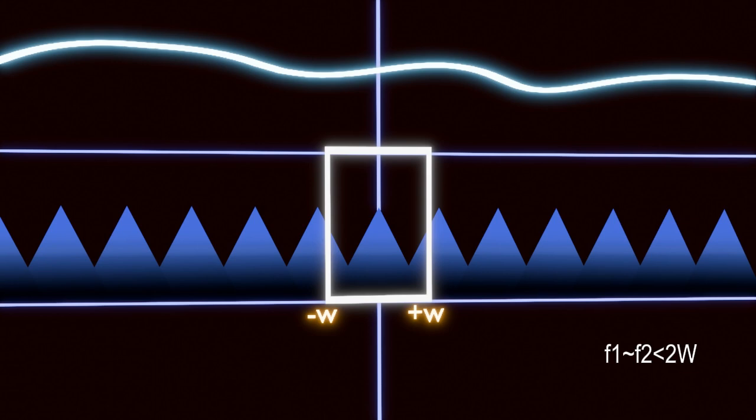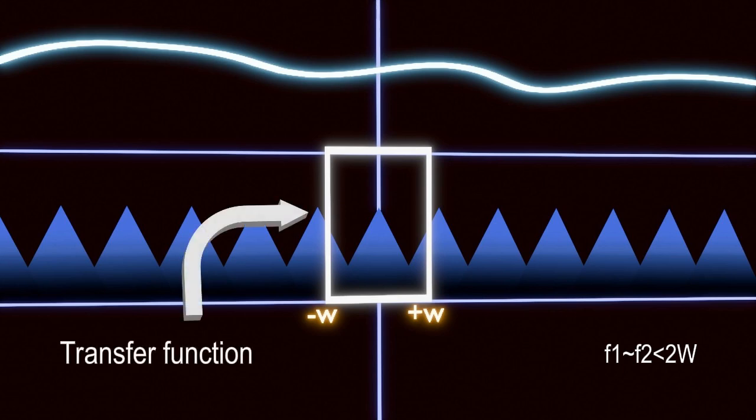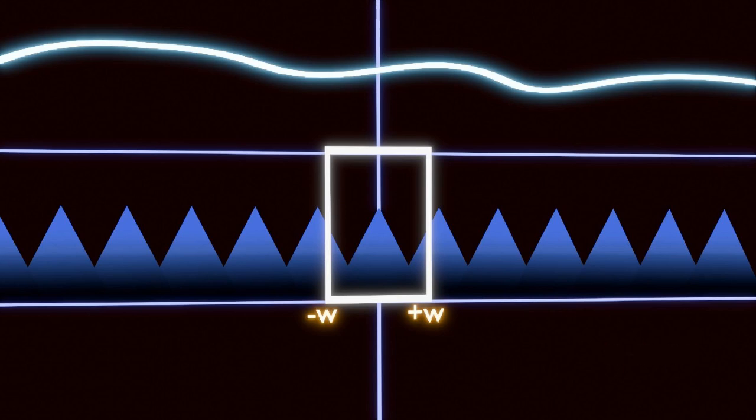To extract the transmitted message at the receiver's side, let's assume that this is the transfer function of a bandpass filter. The original message cannot be extracted here because the overlapping bandwidth causes distortion of the original message.